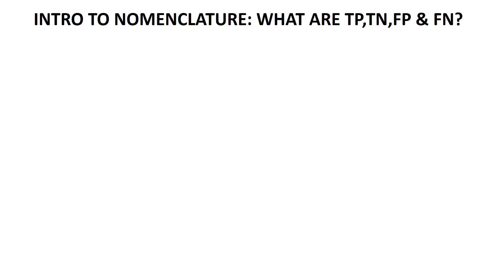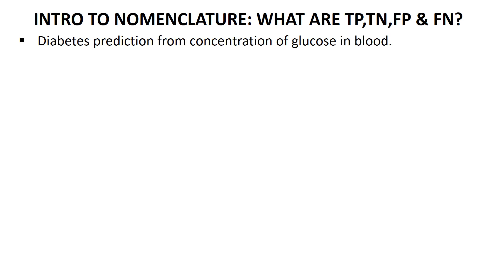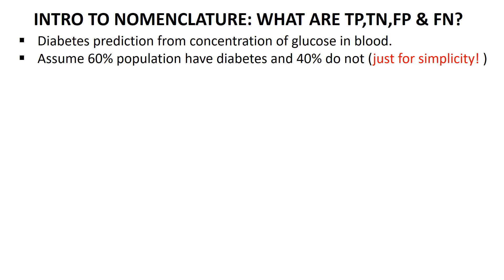Now let's introduce the nomenclature: true positive, true negative, false positive, and false negative. Take a simple example — diabetes prediction from blood glucose concentration. Assume 60% of the population have diabetes and 40% do not. We'll use a smiley face for no diabetes and a crying face for diabetes. We set a threshold on blood glucose level; above it, people test positive; below, they test negative.